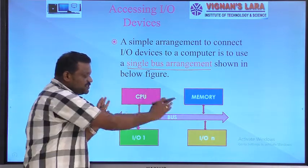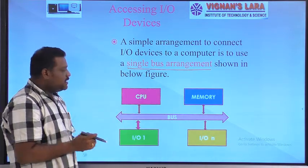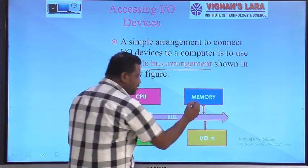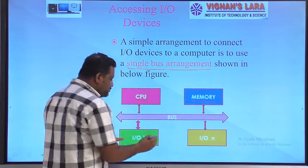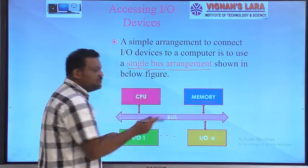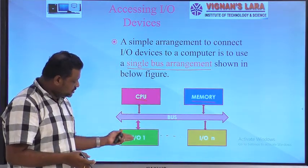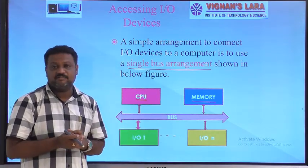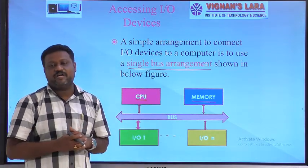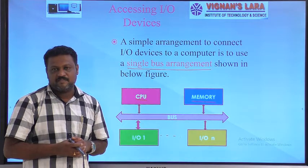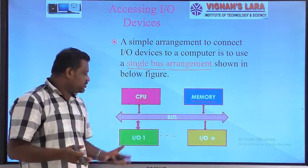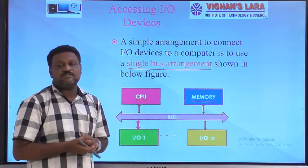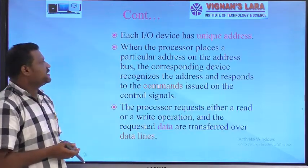Once you observe this structure it is very clear. In our system we have one CPU and memory, and it may consist of more number of I/O devices — I/O device 1 through I/O device N. How can the CPU access information from these I/O devices with the help of this bus?